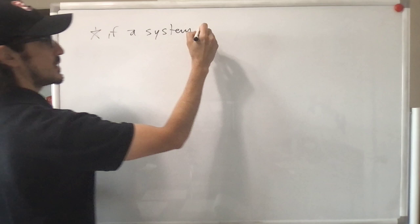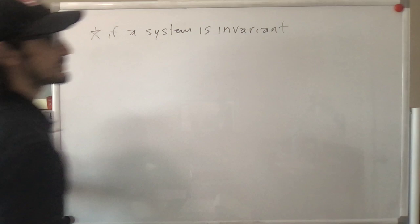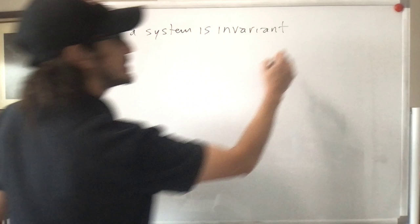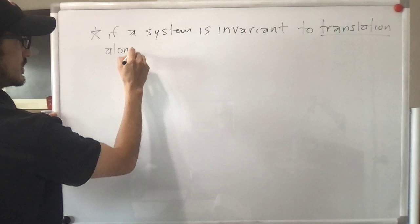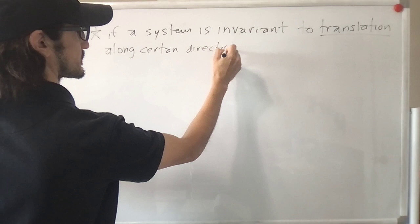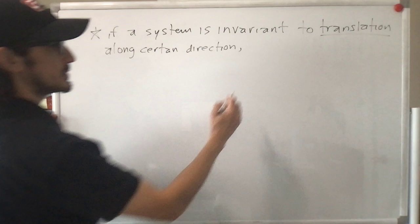We derived from Hamilton's principle the conservation of linear momentum and the conservation of angular momentum in a way that was more general than with Newtonian mechanics. It inherently contains cases in which Newton's third law doesn't hold — for example, when you have electric and magnetic fields. If a system is invariant to translation along a certain direction, then linear momentum is conserved along that direction.